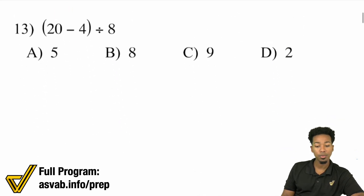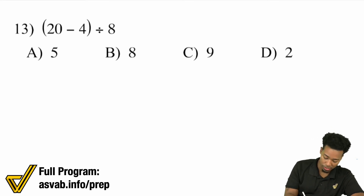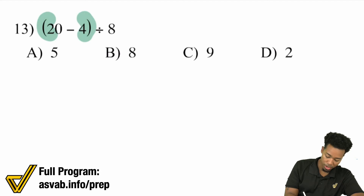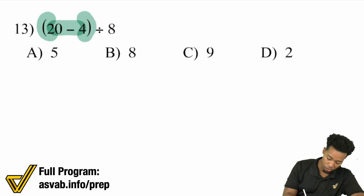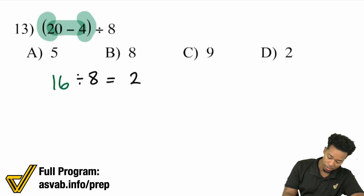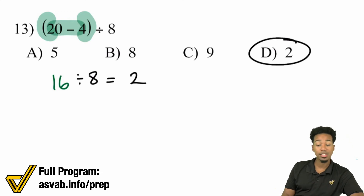Number 13: We have (20 minus 4) divided by 8. I know you see division there, but remember we have a parentheses. So we're going to take care of 20 minus 4 first. 20 minus 4 is going to be 16. And then 16 divided by 8 is going to give me 2. And that's answer choice D.